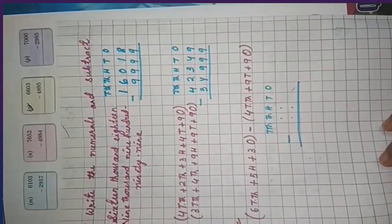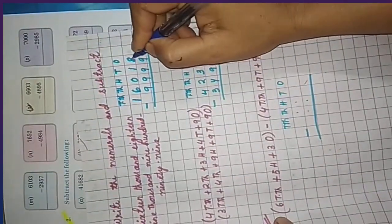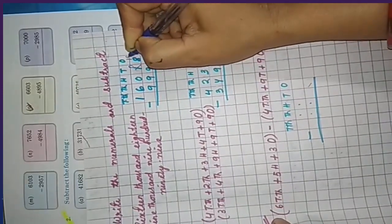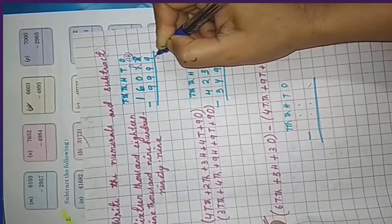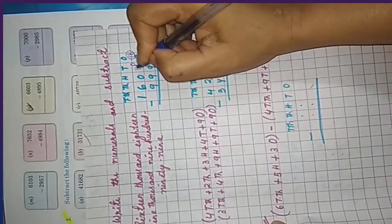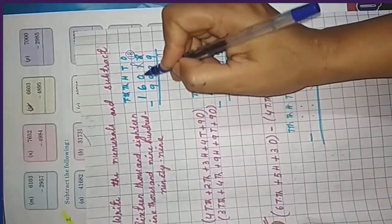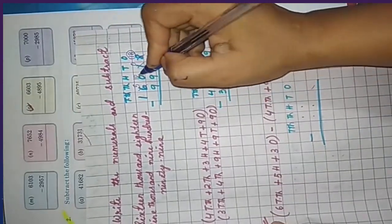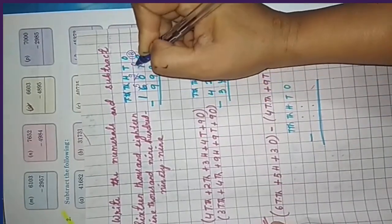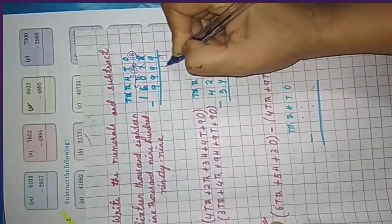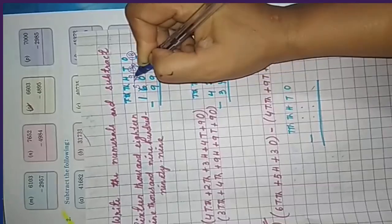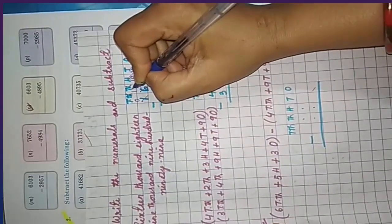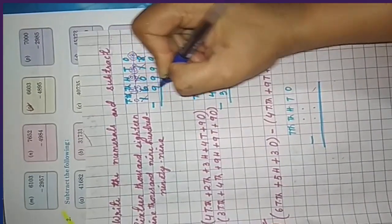Now let's solve. 8 minus 9 is not possible, so borrow — it becomes 18. 18 minus 9 is 9. Now 0 minus 9 is not possible, but this zero cannot borrow from another zero, so the zero in the hundreds borrows from thousands. That gives 5 in thousands — now tens becomes 10. Borrow from that 10: it becomes 9, and ones become 10. 10 minus 9 is 1.